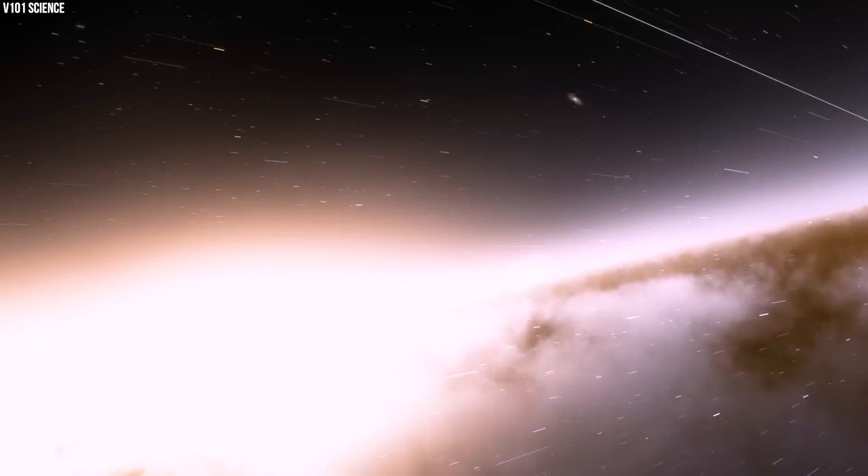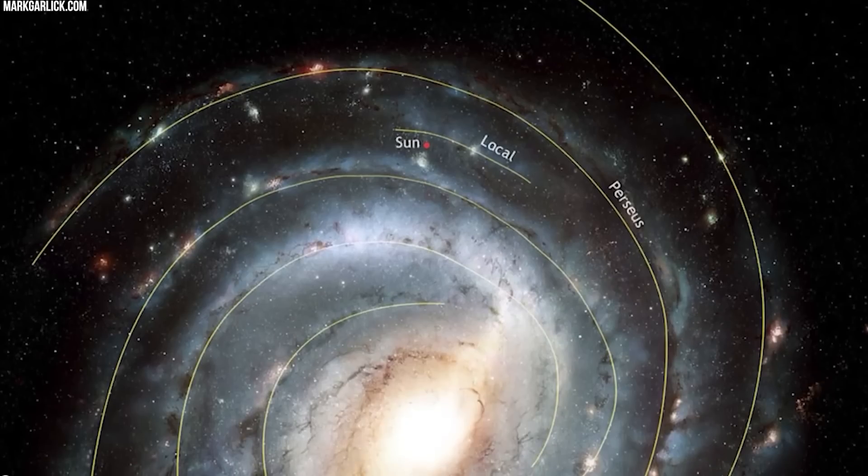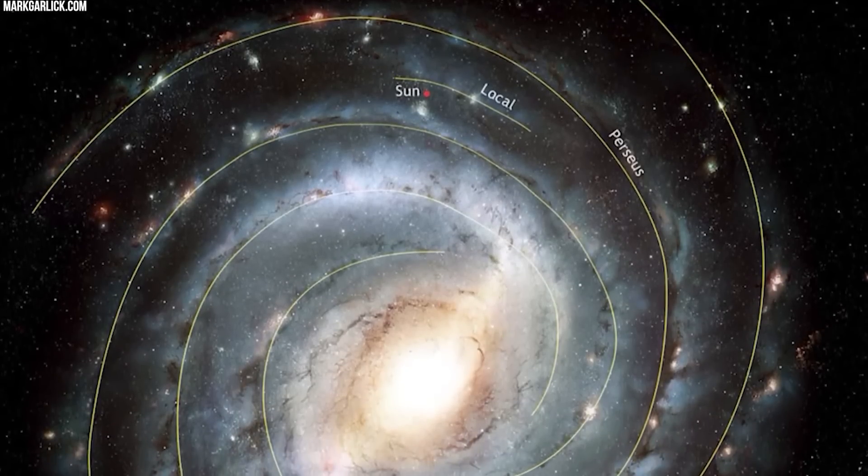As a whole, the Milky Way is moving at an incredible velocity of 600 kilometers per second, with respect to the extragalactic frames of reference.